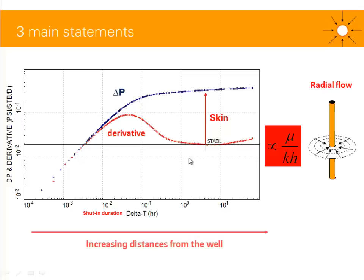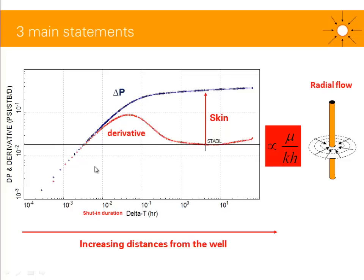The third statement is that your shut-in duration, delta T, could be replaced by delta R — the radius from the well. As delta T increases, you increase the distance from the well; small delta T means you are looking near the wellbore. What you might expect to see in most cases is a long unit slope straight line and a hump on the derivative — this long unit slope straight line on a log-log scale, one log cycle for one log cycle, represents wellbore storage.